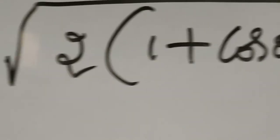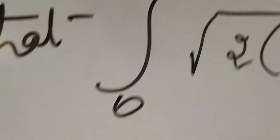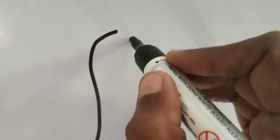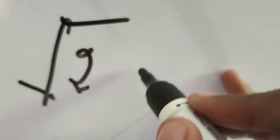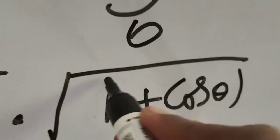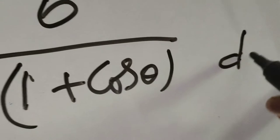Now solving this integral, first of all we are going to rearrange here: integral from 0 to π, separating √2, then √(1 + cosθ) dθ.